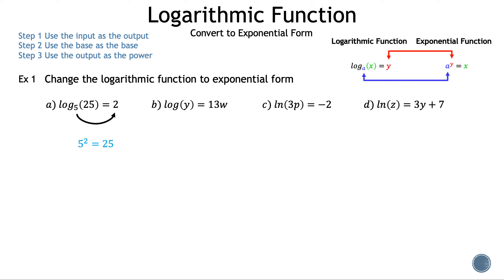Now let's move on to b: log of y is equal to 13w. Let's draw an arrow from the base to the output. Where is the base? The base is 10, and we don't write that because it is the most common, since our number system goes by 10. Now let's draw the arrow from the base to the output — in this case, 10 to 13w. The 10 will be the base of the exponential, and 13w will be the power. We set that equal to the last variable we haven't used, y. So our exponential is 10 raised to the power of 13w is equal to y.